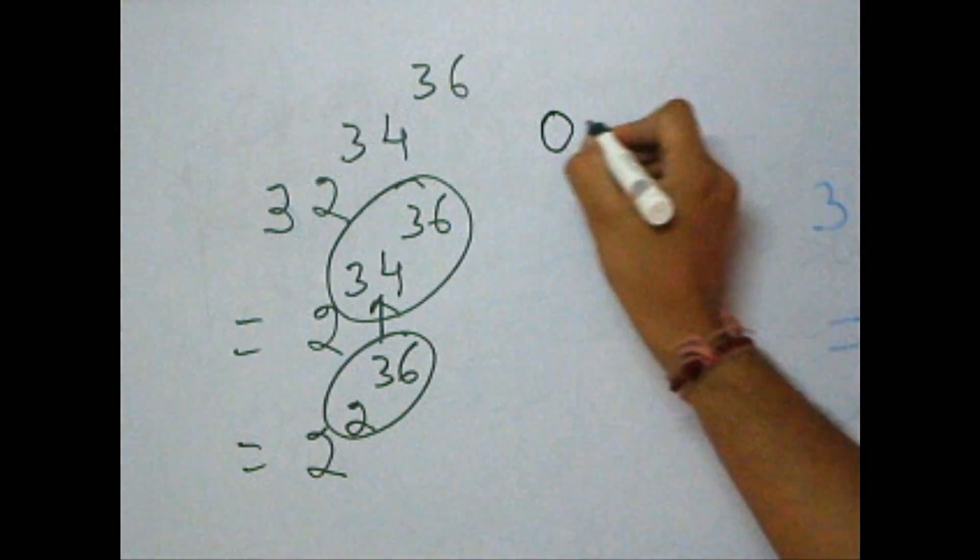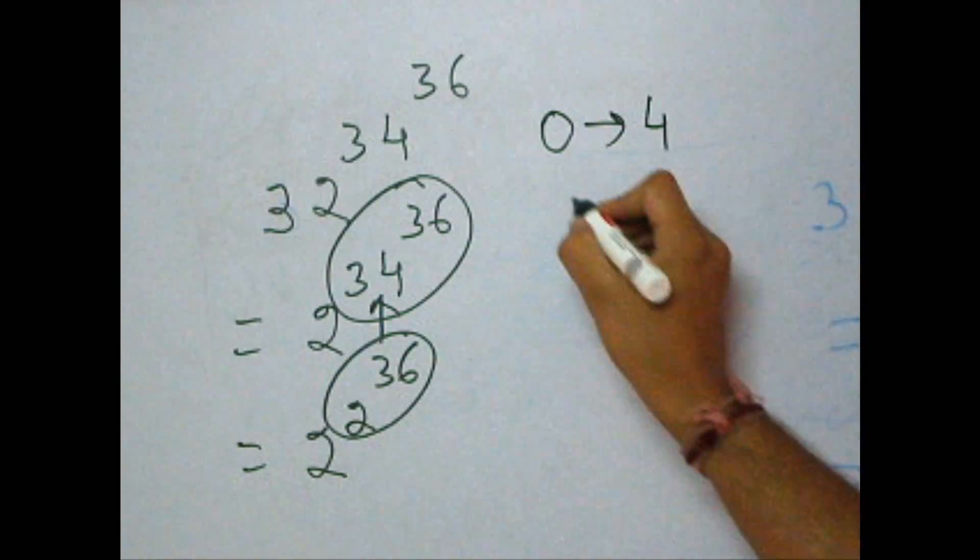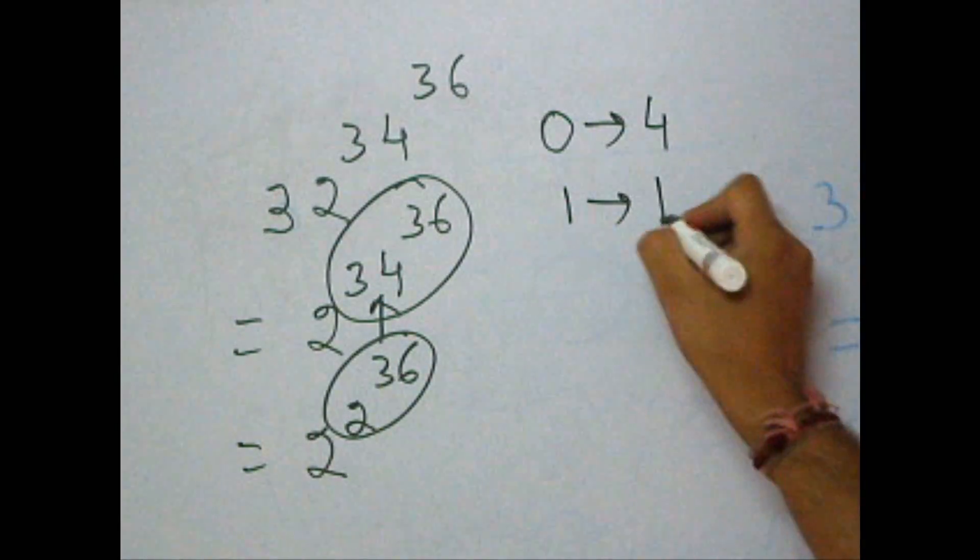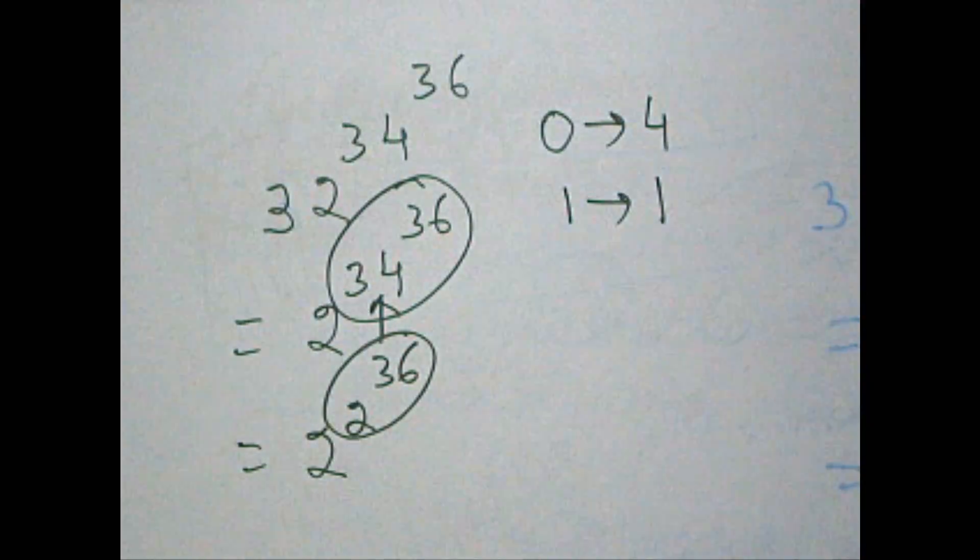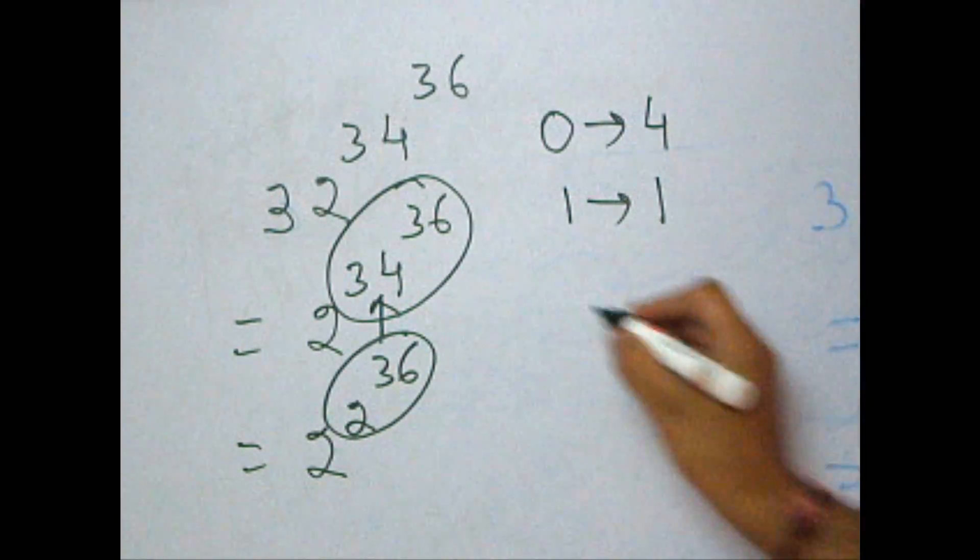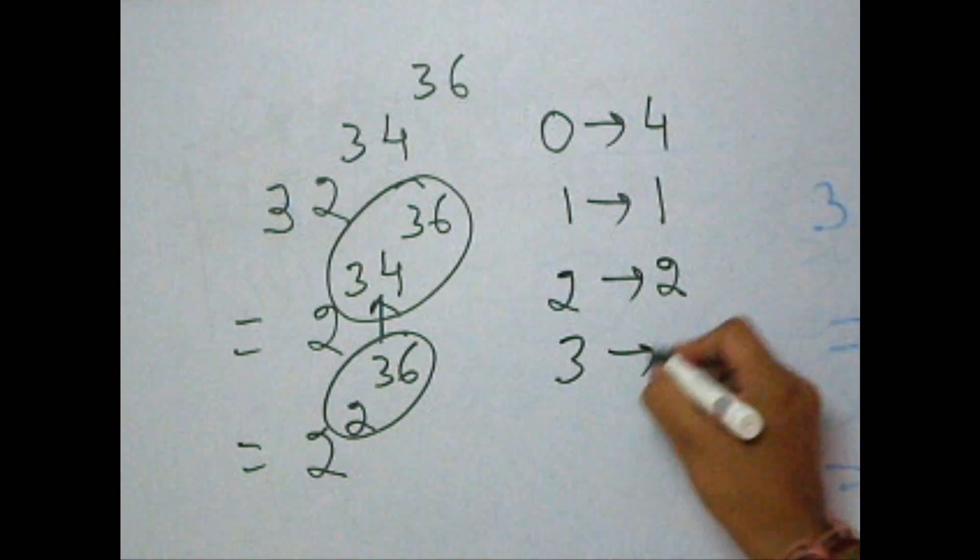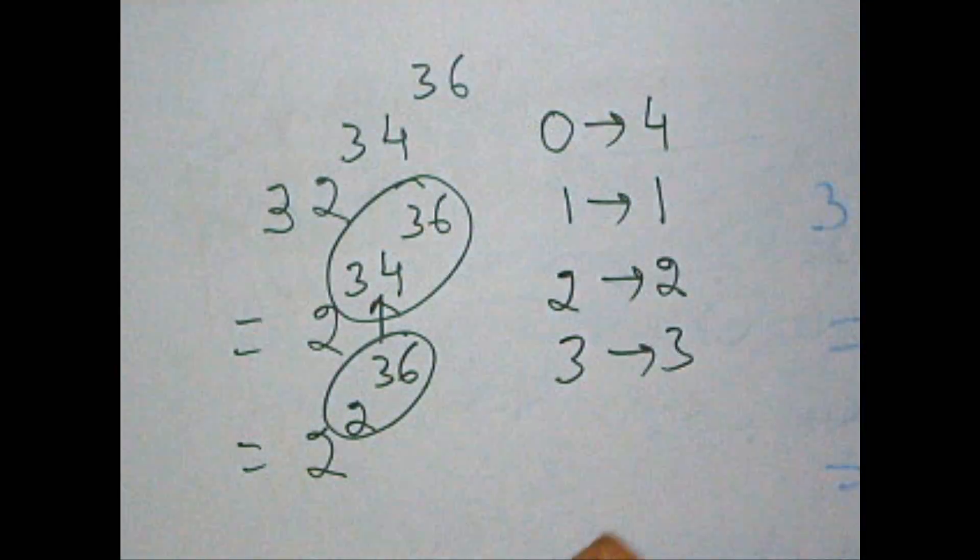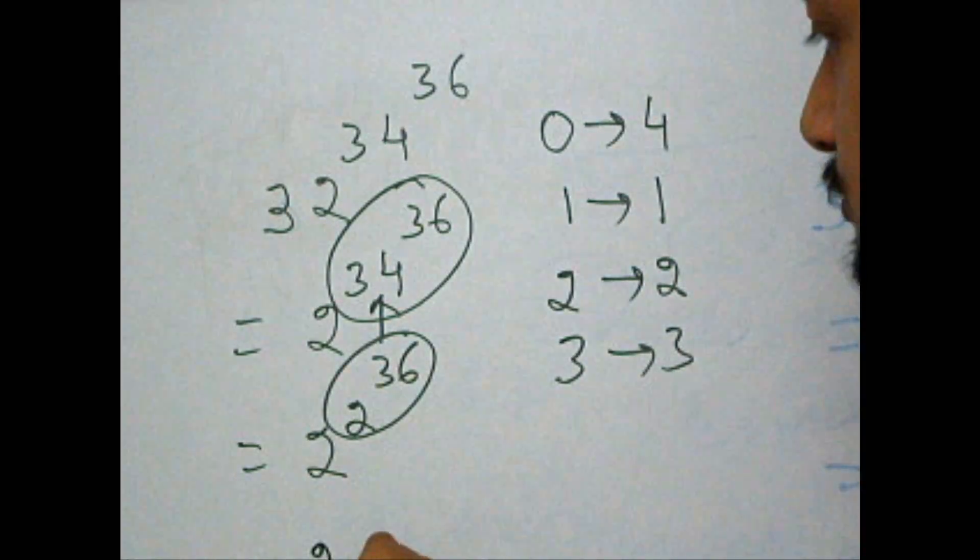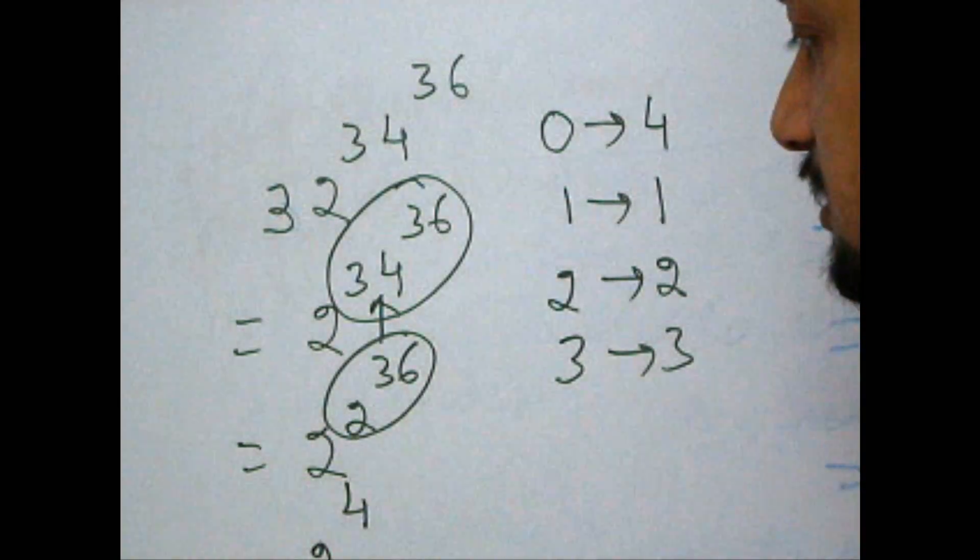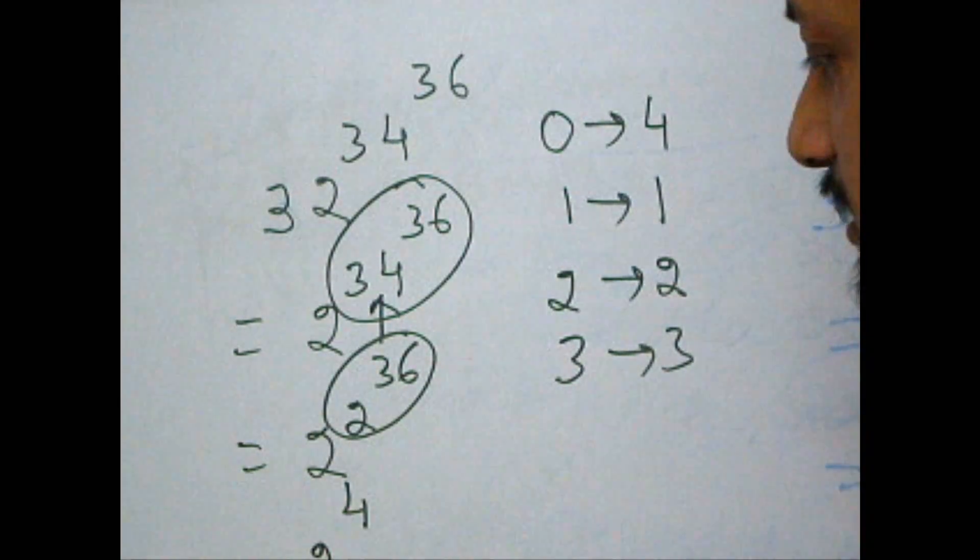Mind it guys, we will not take 0 remainder. We will take 4 instead of that. Instead of 1, we take 1. Instead of 2, we take 2. Instead of 3, we take 3. And instead of 0, we take 4. So, this question is answered as 2 to the power 4, which is 16. Hence, 6, and therefore the answer.